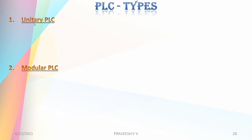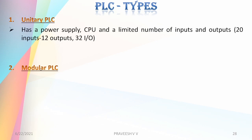Basically we have unitary PLCs and modular PLCs. In unitary PLCs, the input and output ports are fixed and are included along with the PLC, embedded with the processor. It has a power supply, CPU, and a limited number of inputs and outputs — generally 20 inputs and 12 outputs in a 32 IO unitary PLC.